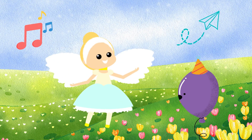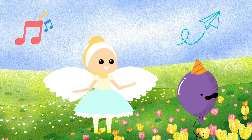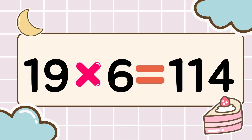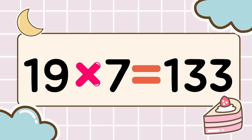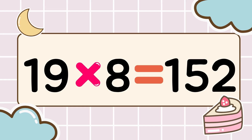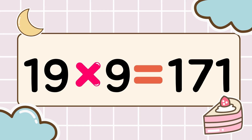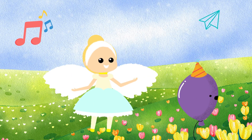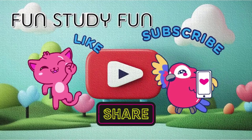You did it perfectly so far! Multiplication mode stays on! Let's go to the next level! 19 times 6 is 114, 19 times 7 is 133, 19 times 8 is 152, 19 times 9 is 171. Learning times tables is so fun! We are fun, study, fun!